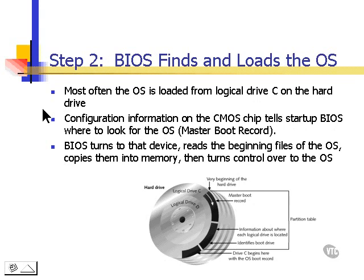Step number two: BIOS will find and load the operating system. Most of the time, the operating system is going to be on logical drive C, which is the first drive in the computer. The configuration information on the CMOS chip will tell BIOS where to look for the operating system — this is called the master boot record. BIOS will find that device, begin reading the files, copy them into memory, and then turn control over to the operating system.